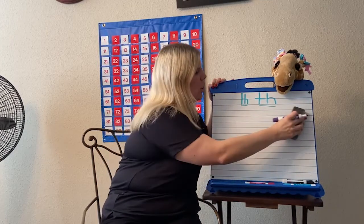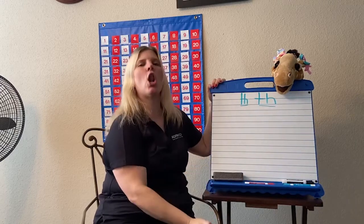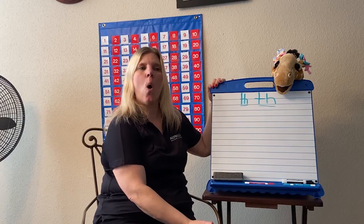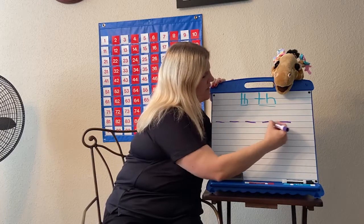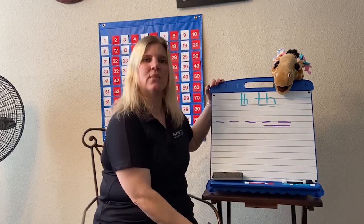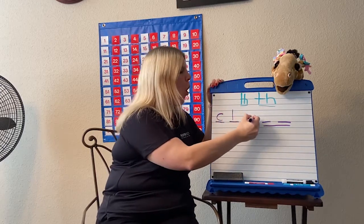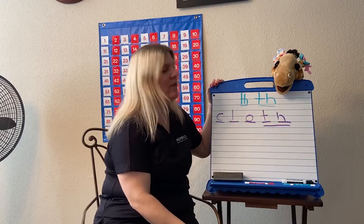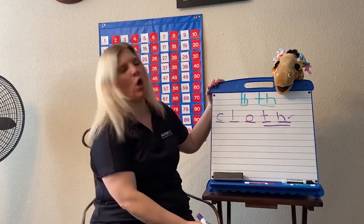The next word is cloth. I used a cleaning cloth to clean my table. Cloth. It's got a CL blend at the beginning — a C and an L. CL-O-TH. Five letters, and the digraph is at the end. You should have written CL-O-TH. Cloth. If you've got it right, give yourself a check. If you need to correct it, you can do that now.